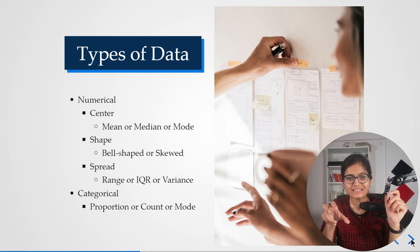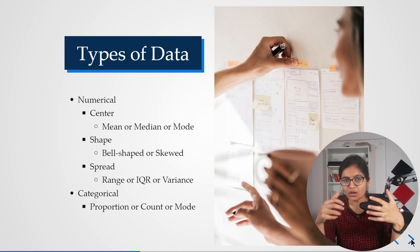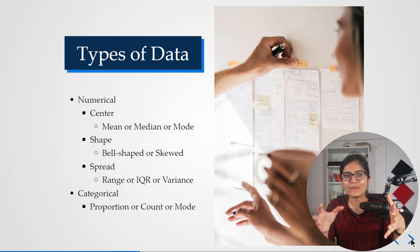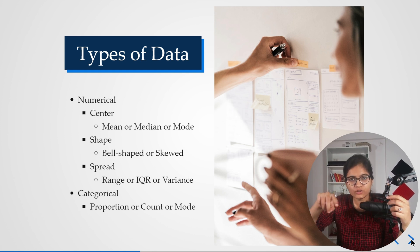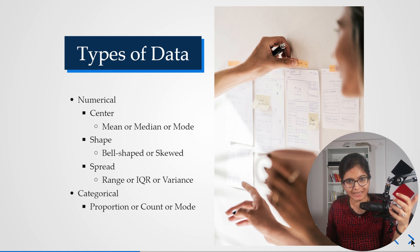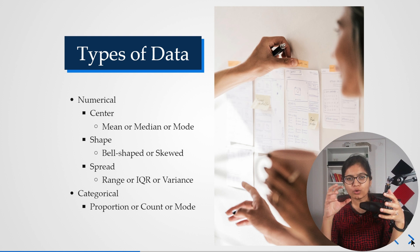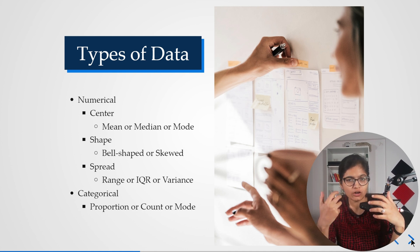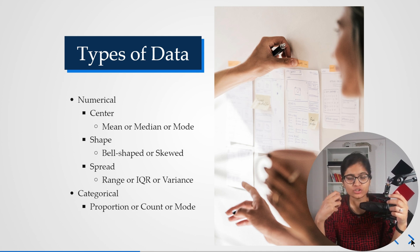First is center — for numeric data you can calculate the mean, median, and mode. Step by step in each part of the video I'll talk about all these in great detail. Second is shape — whether data has a normal distribution or a bell-shaped curve, which is a very important topic and I'll create a separate video for that. Third is spread — how your data is spread across the mean, which can be measured using range, IQR (interquartile range), or variance.